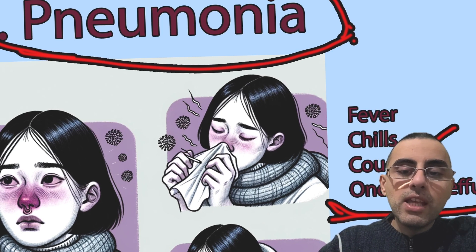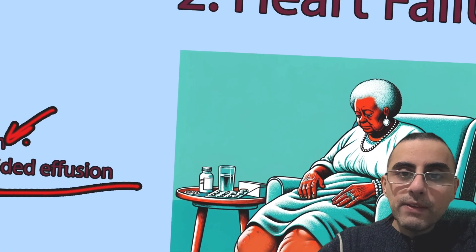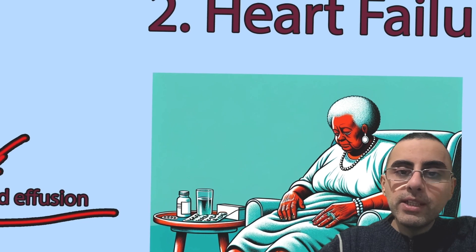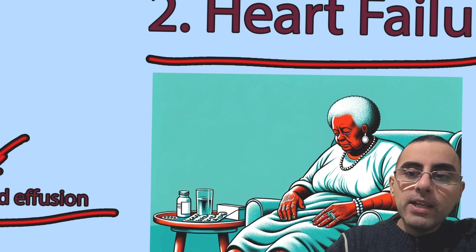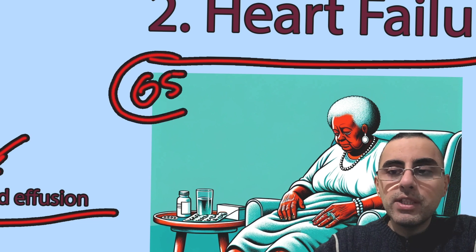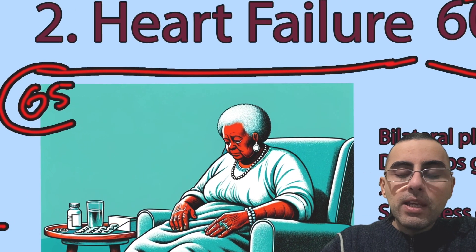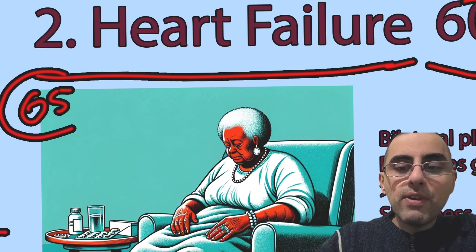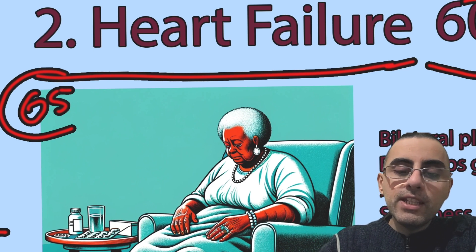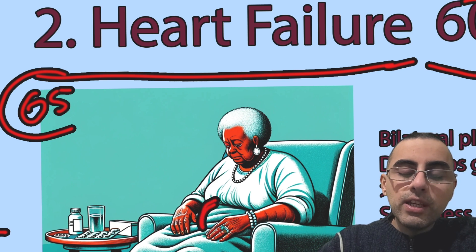The second most likely diagnosis overall, but the first most likely among older adults, is heart failure. For people after age 65 with pleural effusion, there is a 60% probability it is because of heart failure. Such persons usually have other symptoms of heart failure such as shortness of breath, fatigue, leg swelling, and ascites — fluid in the abdominal cavity — which is also common in heart failure.